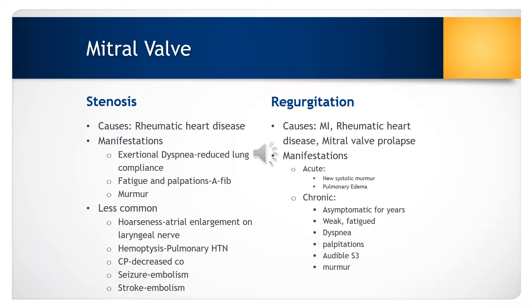The left atrial pressure and volume increase. This causes higher pulmonary vascular pressure and then hypertrophy of the pulmonary vessels. Typical signs and symptoms of someone with mitral valve stenosis will be exertional dyspnea because of the reduced lung compliance. They may have fatigue and palpitations, and you may see atrial fibrillation.